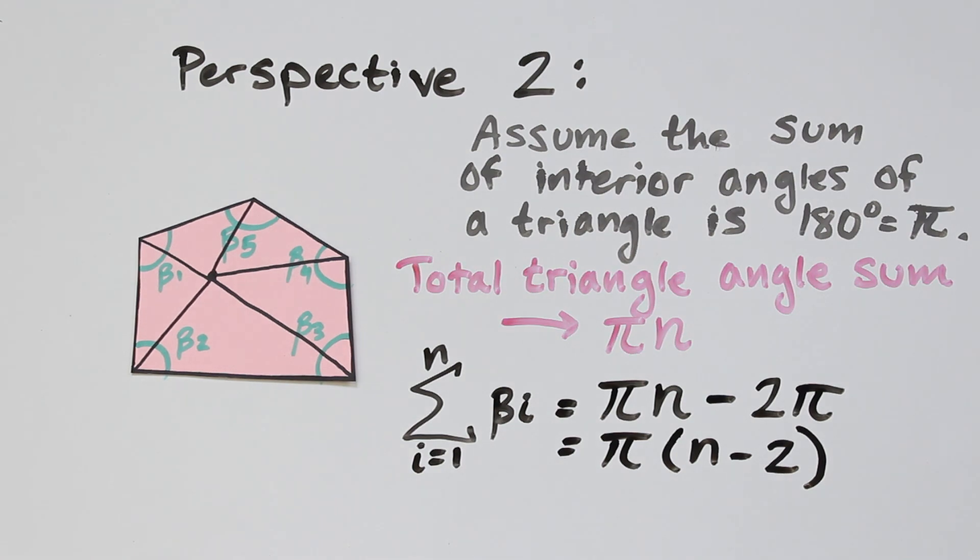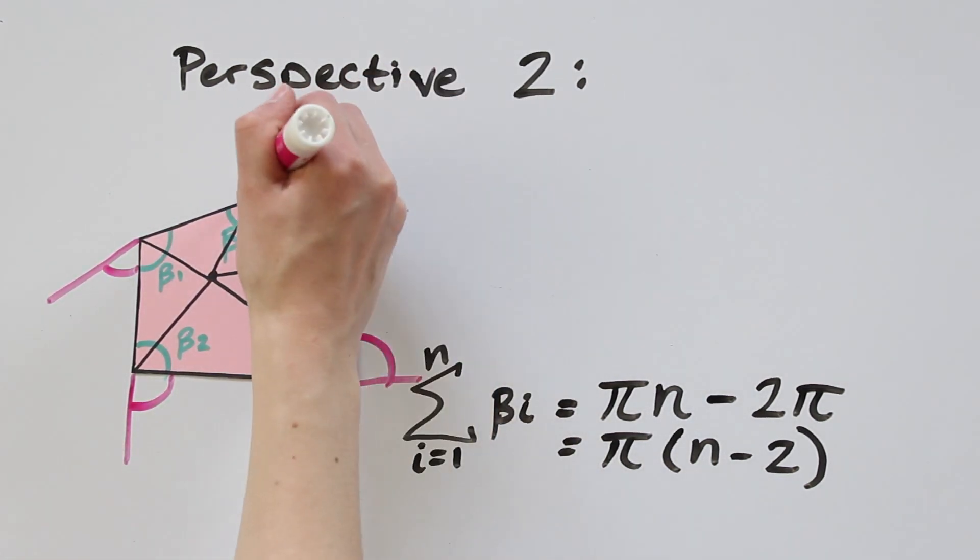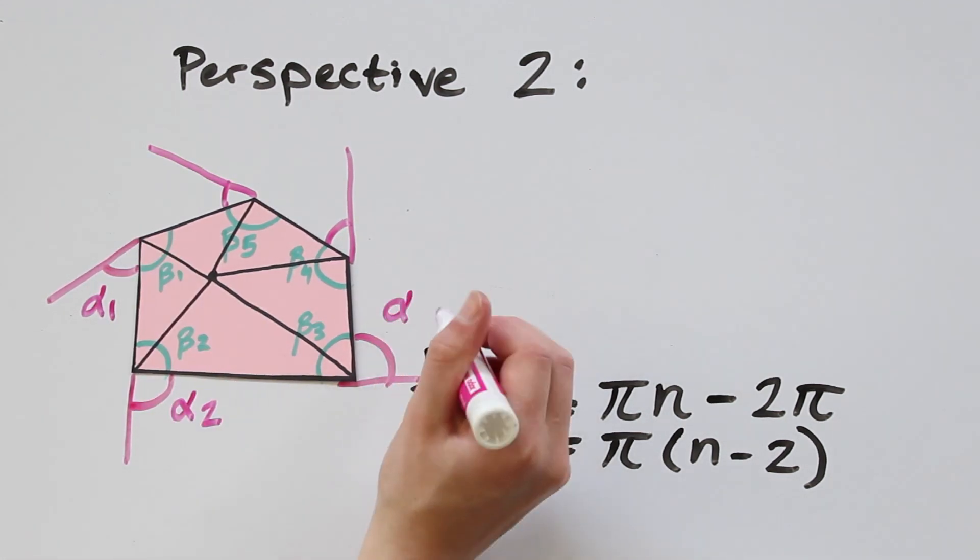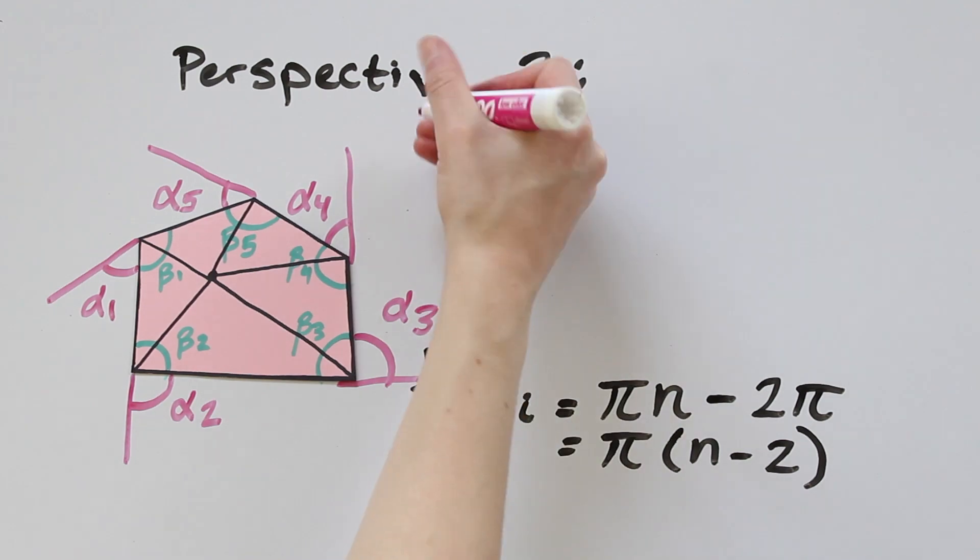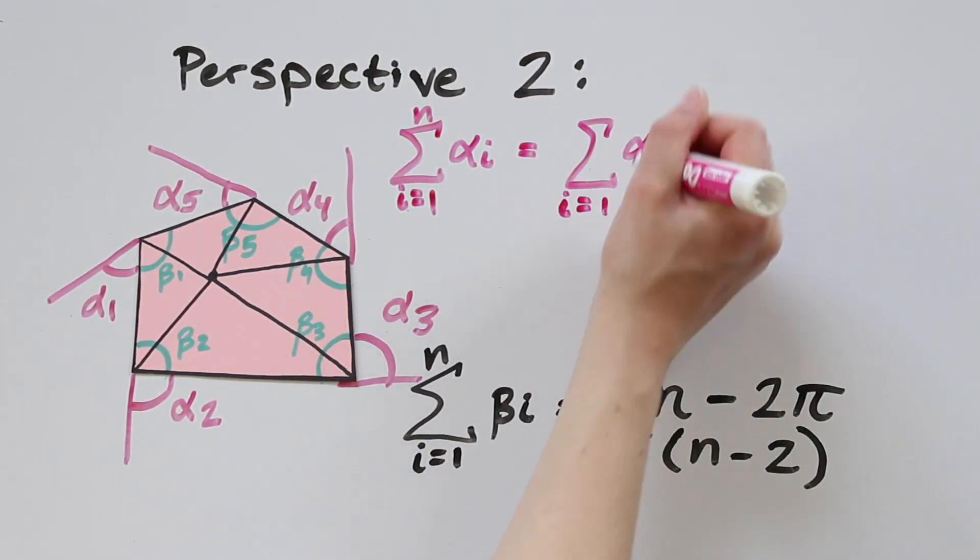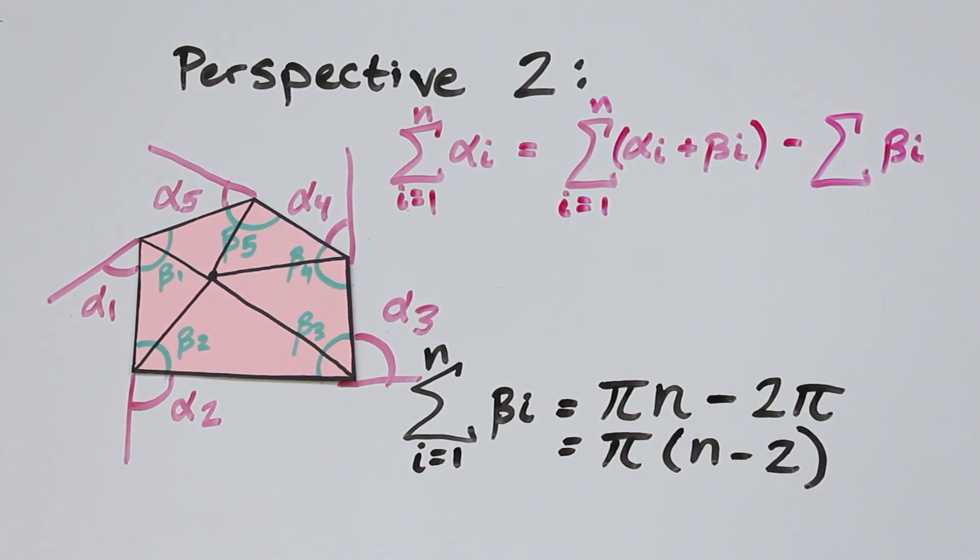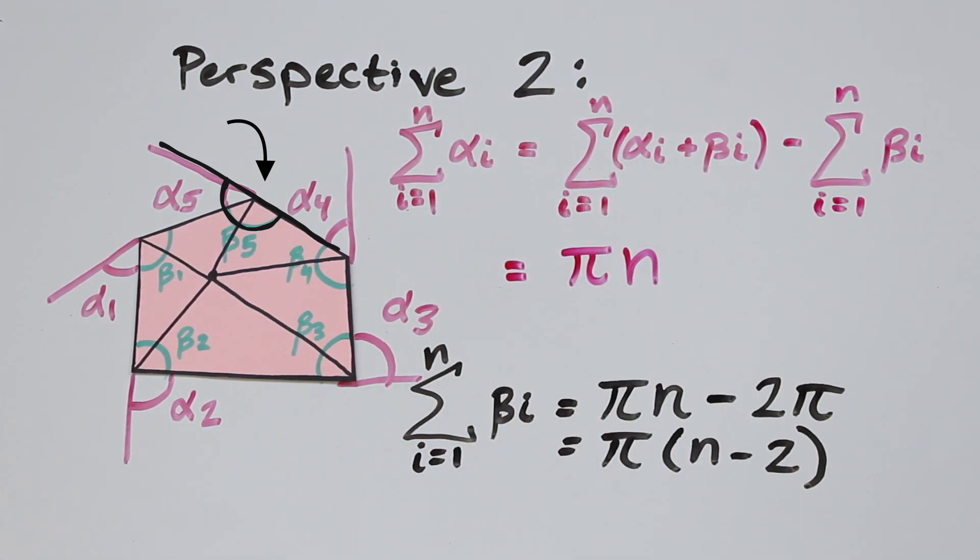We're going to hold on to that and now add the exterior angles to the picture. We know that the sum over the exterior angles, the alpha i, is the sum over the alphas and the betas minus the sum over the betas. Again, like the last perspective, we note that the alphas and the betas form n sets of supplementary angles. So their total angle sum is pi times n.